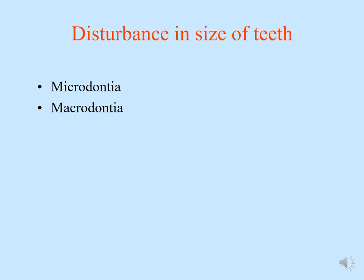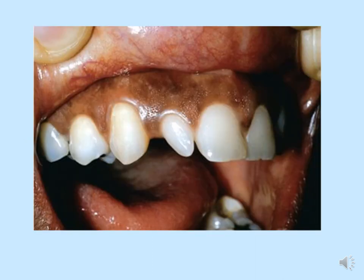Moving on to disturbances in size of teeth. If the size is small, we call it microdontia. If the size of the tooth is larger than usual, it is called macrodontia. This is a case of a lateral incisor that is much smaller and appears peg-shaped — single tooth microdontia, also described as peg-shaped lateral incisor.